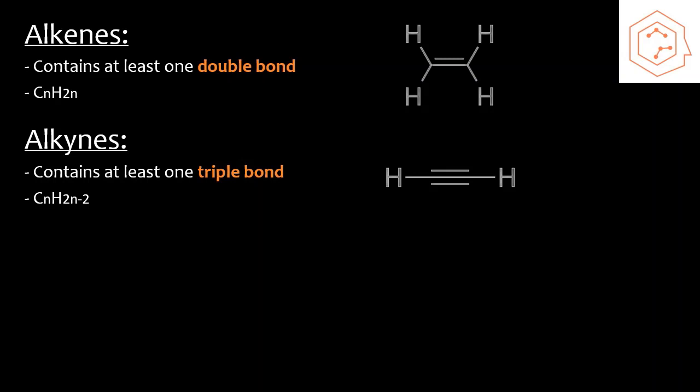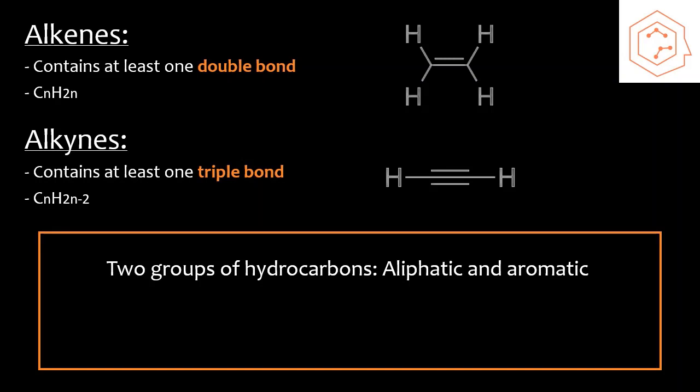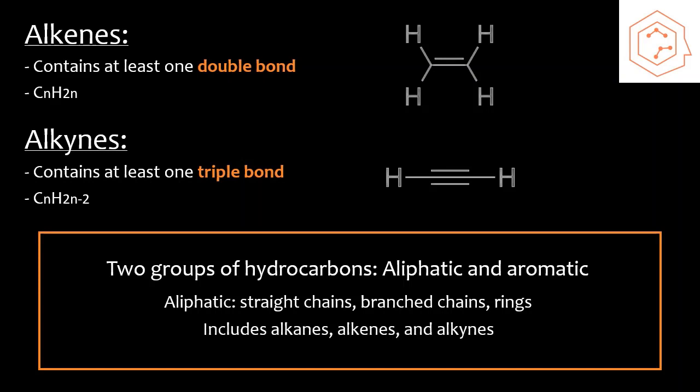In general, there are two groups we can classify hydrocarbons as: aliphatic and aromatic. Aliphatic hydrocarbons are any hydrocarbons that are straight chains, branched chains, ring structures, or non-aromatic rings — this includes all the hydrocarbons we've already seen: alkanes, alkynes, and alkenes. We will discuss aromatic hydrocarbons in a further video.